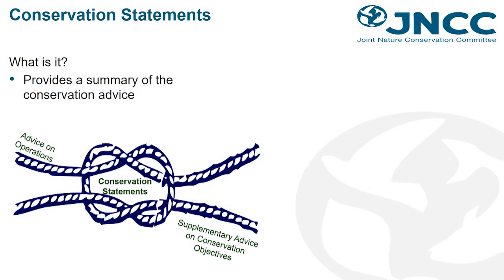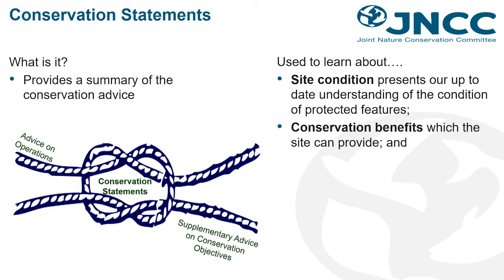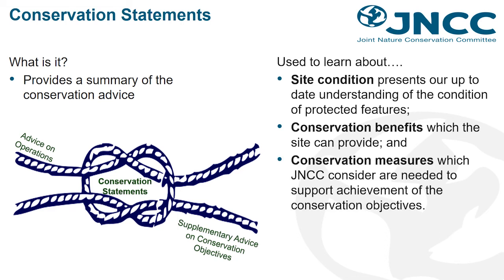Conservation statements provide a summary of the conservation advice using detail from the supplementary advice on conservation objectives and information from the advice on operations. The statements include site condition, which presents our up-to-date understanding of the condition of the features within the site, as well as the conservation benefits the site can provide, including ecosystem services which help understand what is important about the site and why it needs protecting. Conservation measures are also provided which JNCC considers are needed to support achievement of the conservation objectives, providing clarity around measures needed to support restoration or maintenance of the features within the site.